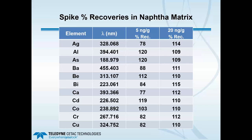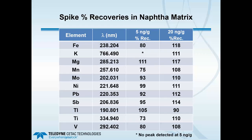For spike recoveries, our lowest calibration standard is 20 nanograms per gram. We pushed down to 5 nanograms per gram — four times lower — and still achieved good results. The recovery range was approximately 70 to 120 percent at 5 ng/g, and easily 90 to 120 percent at 20 ng/g. The one element with difficulties at 5 ng/g was potassium at 766.490 nm, which can be challenging at low levels. Overall, this was very good, especially for a spike of 5 ppb in liquid by weight.